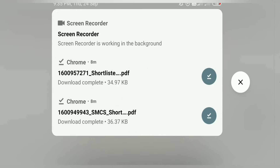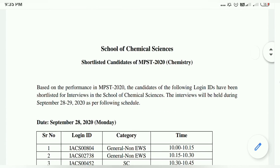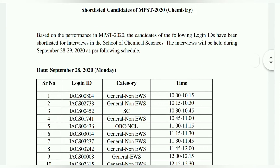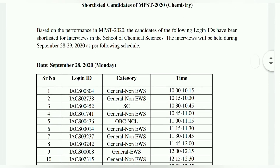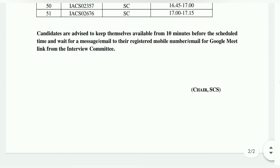तो first हम देखेंगे कि chemistry के लिए कौन बच्चे select हुआ. तो यहां पर देखो chemistry के लिए जैसे दिया है — login ID, category, time — यह सब कुछ दिया हुआ है. इसके नीचे एक option है कि candidate को बताया गया कि जो बच्चे यहां पर selected है interview के लिए, 10 minute पहले तुम्हारा जो phone number और email ID दिया हुआ है, उसको लेकर बैठना है.